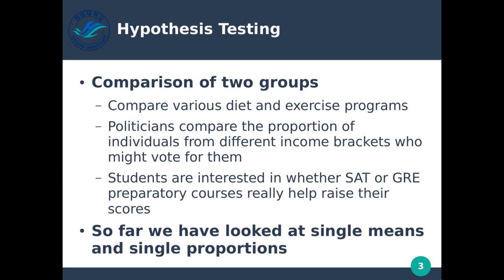Politicians compare the proportion of individuals from different income brackets who might vote for them. You can trace different voters based not only on regions, but also on income. In the U.S., people who make a lot of money or very little money tend to vote conservative, while middle-income people tend to vote more liberal or democratic. Politicians are very interested in how these different groups will react during voting time.